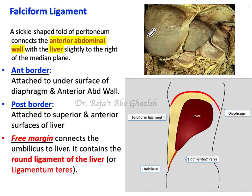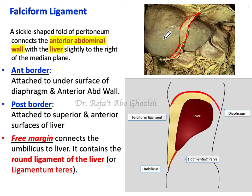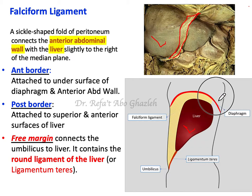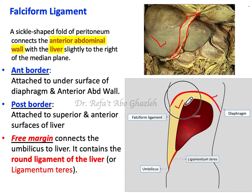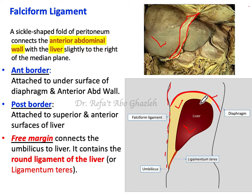The falciform ligament is a sickle-shaped fold of peritoneum, as you can see here. It is composed of a double layer of peritoneum that connects the liver to the anterior abdominal wall. Looking at the picture below, you can see the liver and the diaphragm, and the yellow color indicates the falciform ligament extending along the anterior abdominal wall. The anterior border of the falciform ligament...